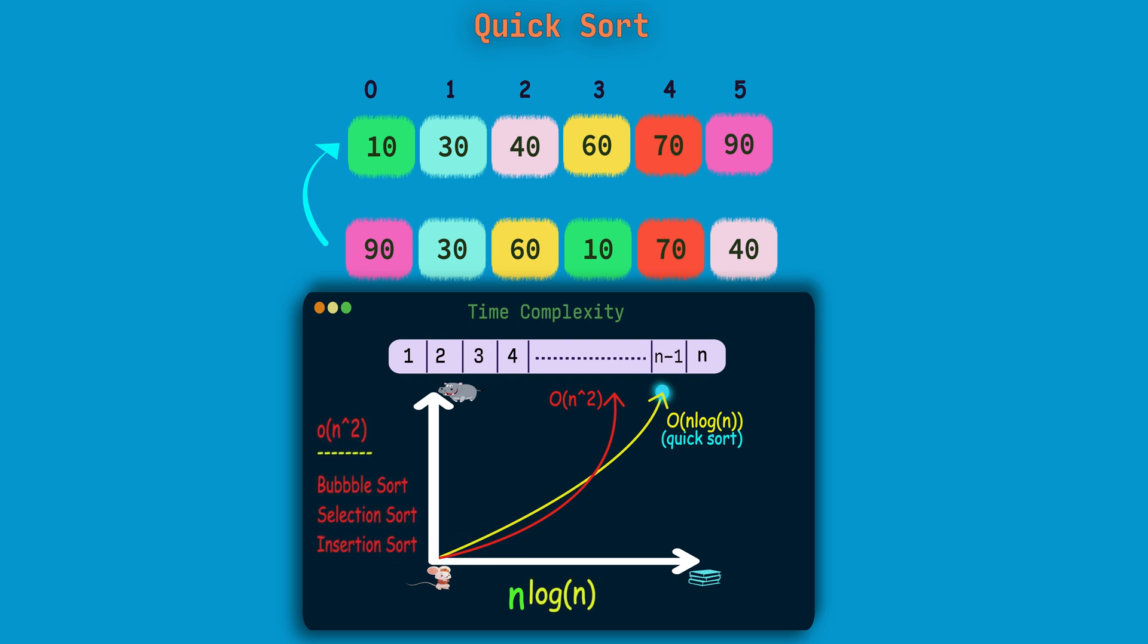So if you compare both the time complexities, the time complexity of the QuickSort algorithm is better than the bubble sort, selection sort, and insertion sort algorithms. There is one worst case where this QuickSort time complexity can go to n square if the array is already sorted and if we are choosing the pivot as the largest or smallest element from the array.